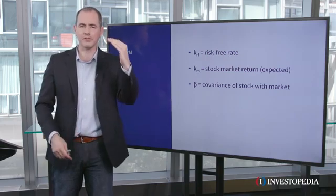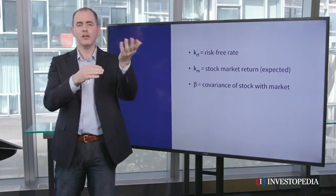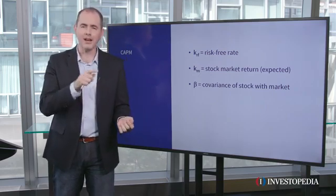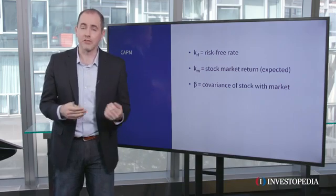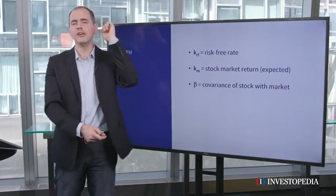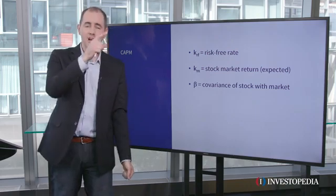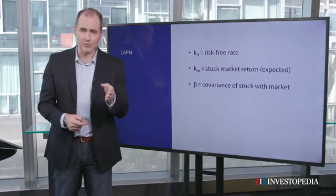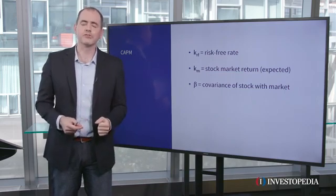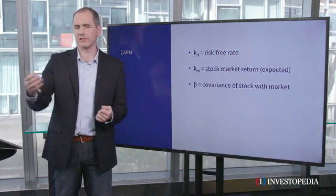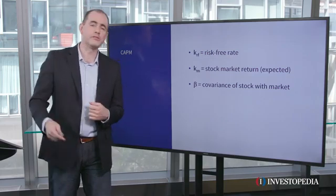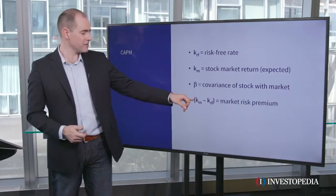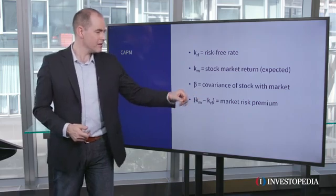If the market went up 5% and the stock only went up 2.5%, market went down 10% and stock only dropped 5%, it would have a beta of 0.5 — half as variable. If the market was up 10% and the stock was down 10%, market's down 20% and stock is up 20%, it would have a beta of negative 1 — actually inversely correlated. That is extremely rare, but also extremely valuable for diversification, to have something that zigs when the rest of your portfolio zags. And finally, the market risk premium is simply the expected return of the market minus the risk-free rate.